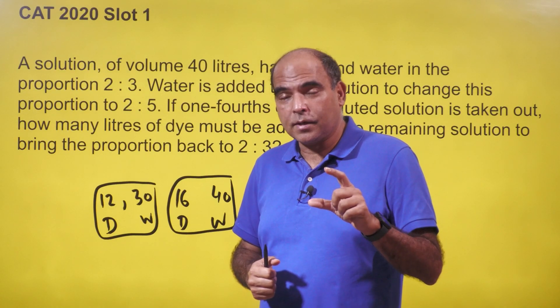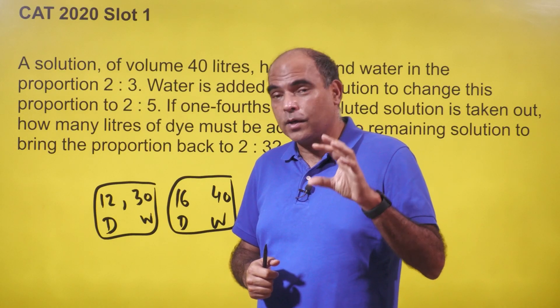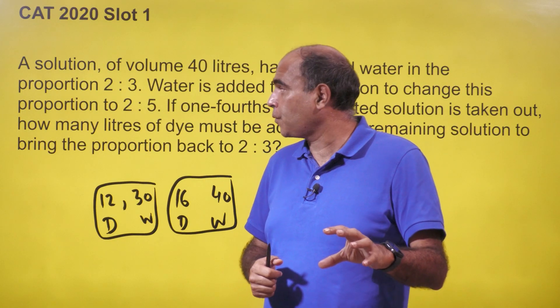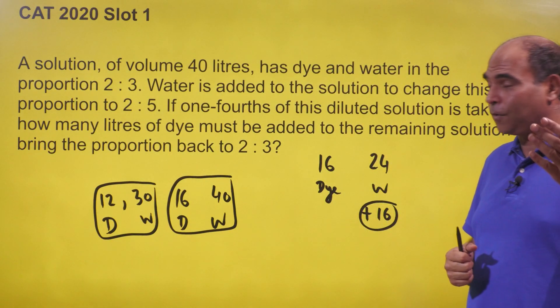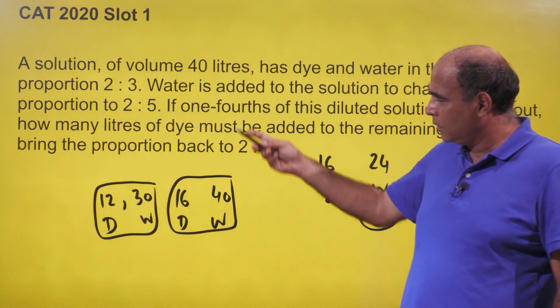Hi everyone, a very simple CAT 2020 question, Slot 1. A 60-second solution for it. It's a question based on mixtures and solutions. A lot of you are very scared of mixtures - you should not be. See how simple this is.